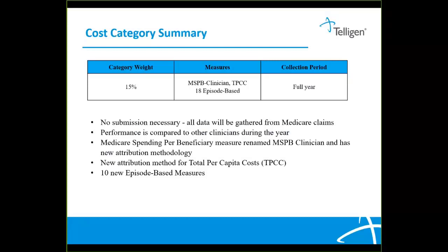Of the 18 episode-based measures, 10 are new for 2020. Also new for 2020, the Medicare spending per beneficiary measure now includes the word "clinician" in the title to differentiate it from the Medicare spending per beneficiary measures in other programs. There are also revised attribution methods for the total per capita cost measure and the Medicare spending per beneficiary clinician measure.